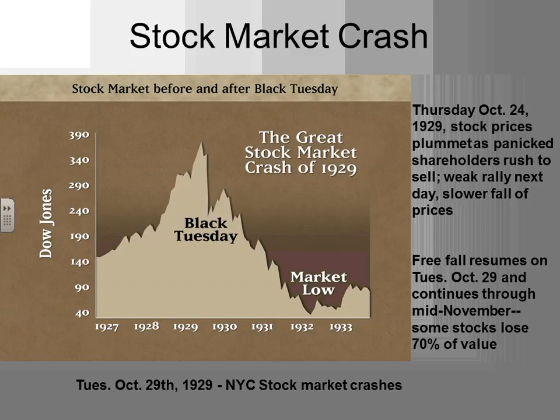Today they can actually pause trading on the stock market if there's a free fall — shut it down so people can take a breather and regroup. But that didn't exist in this time period, so the whole day is just this giant panic as people try to sell whatever they can for however much they can. By the time the markets close, it's the single greatest percentage drop in stock market history. That single long downhill slide on the graphic is the single day — Tuesday, October 29, 1929.